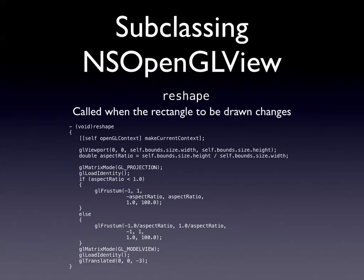Reshape is another method called whenever the rectangle changes shape or the visible region of the view changes. Use it to move your camera, change the aspect ratio, and manipulate OpenGL matrices when your view changes. If you move your window and haven't overridden this method, your teapot or whatever you're representing will get squished instead of changing uniformly. It also lets you handle resolution changes in games.